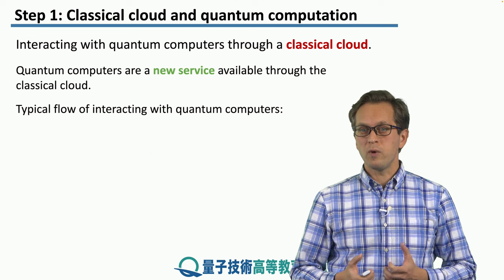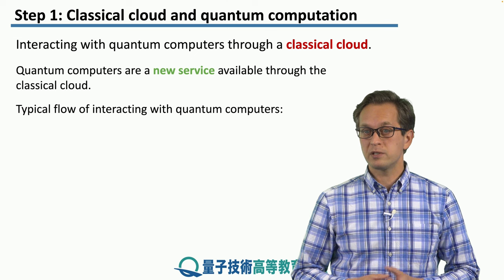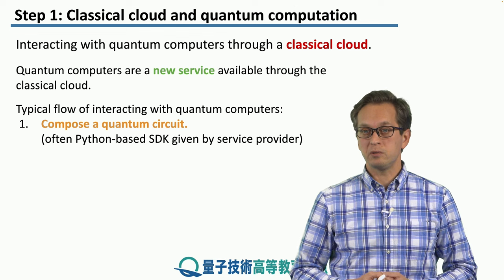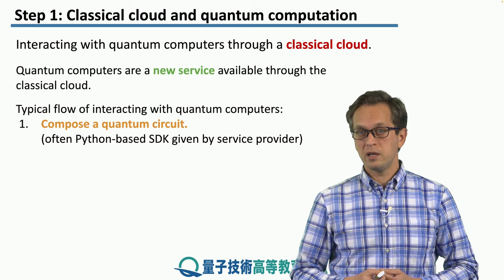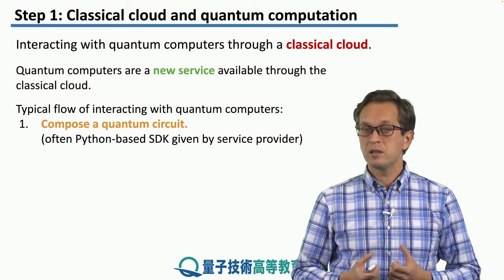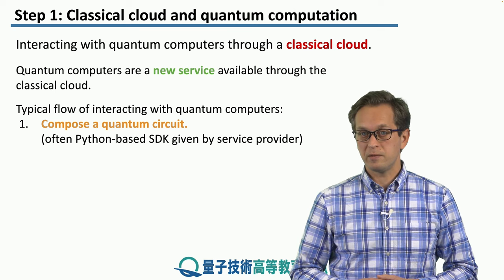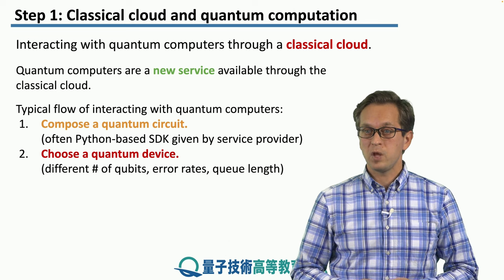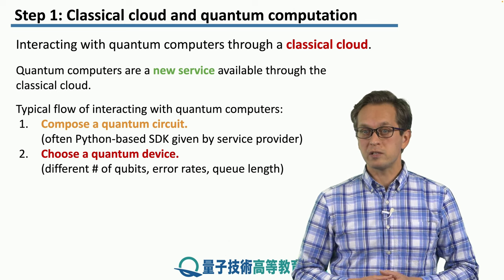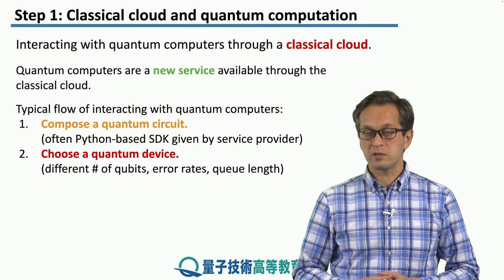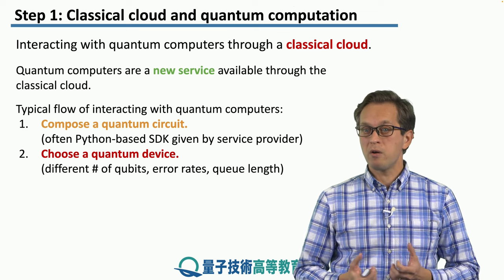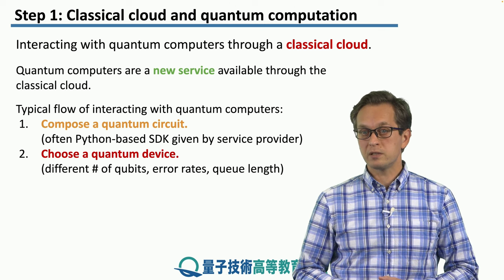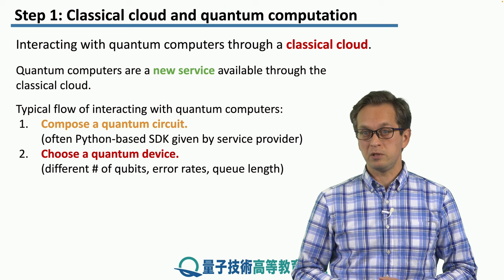The typical flow of interacting with quantum computers is the following. First, we compose a quantum circuit that we would like to execute on one of these quantum computers. This is often done in a Python-based SDK given to us by the service provider. Once we have the quantum circuit, we can choose a suitable device. If our circuit is too large, we need to pick a device with a larger number of qubits. If we want good error rates or the queue length is too long, all of these affect our choice of a suitable quantum device.